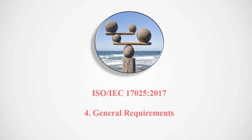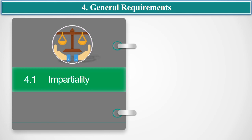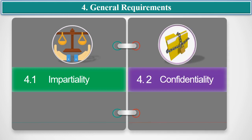Welcome to the session on Clause 4 of ISO/IEC 17025:2017. The title of the clause is General Requirements. This clause is divided into sub-clauses. Sub-clause 4.1 provides requirements on impartiality, whereas sub-clause 4.2 is dedicated to confidentiality. These sub-clauses will be discussed in detail in the following slides.